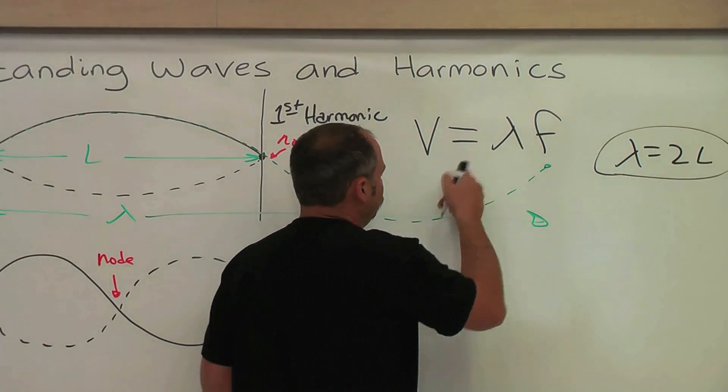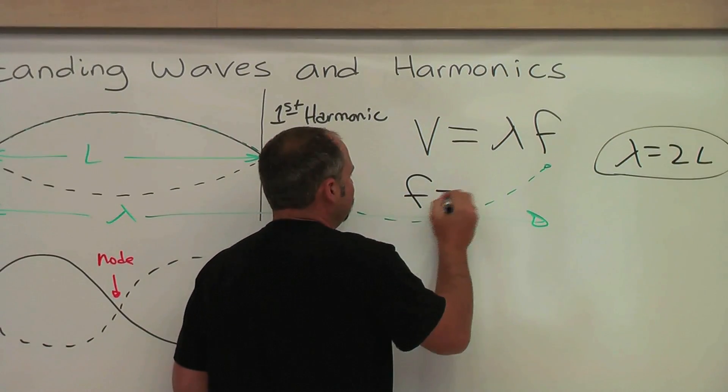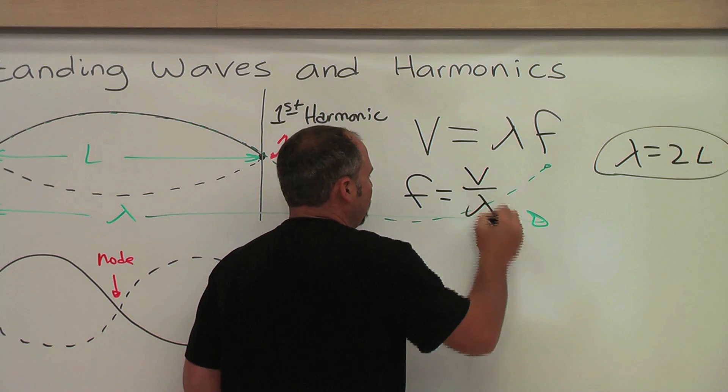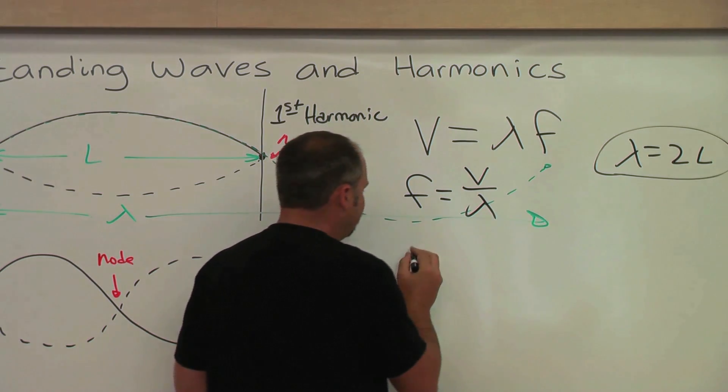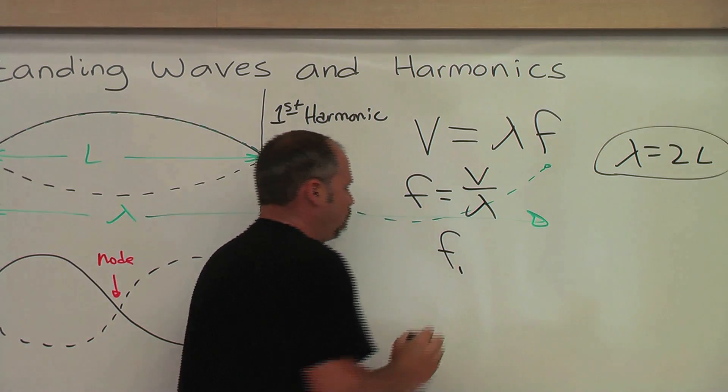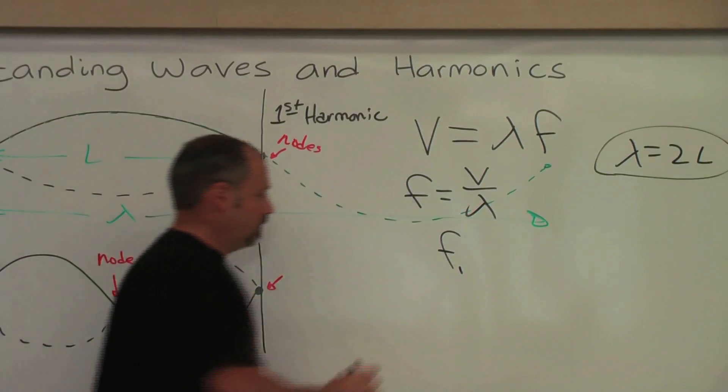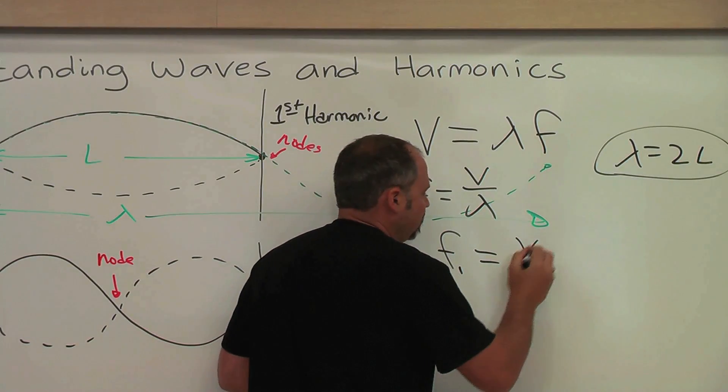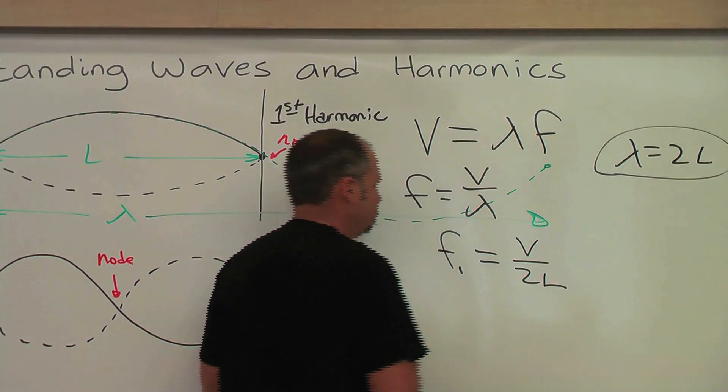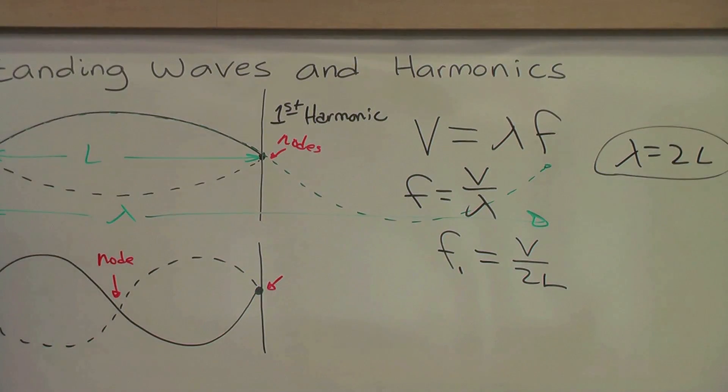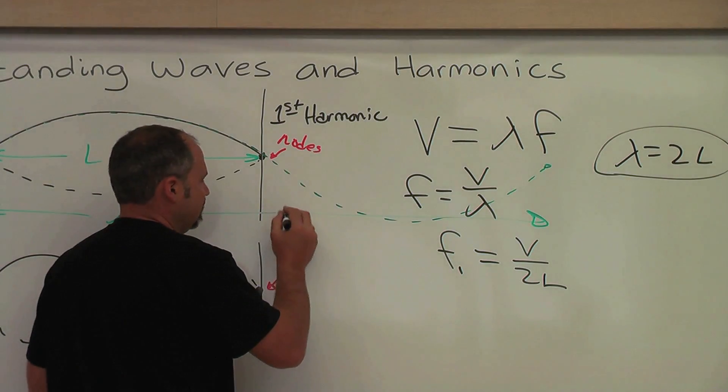Therefore, rearranging the wave equation so that the frequency is the speed over wavelength, and then plugging in here, I'll call this F1, so the first harmonic, this equals V over 2L. We got the first one. That's this guy.